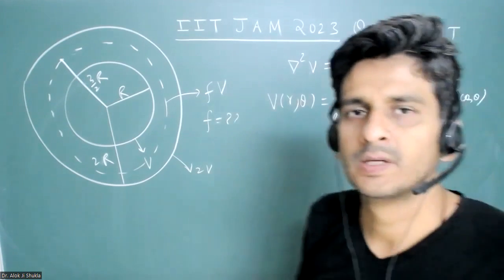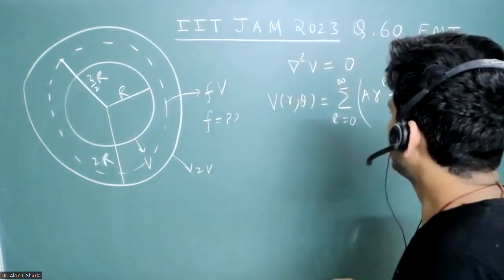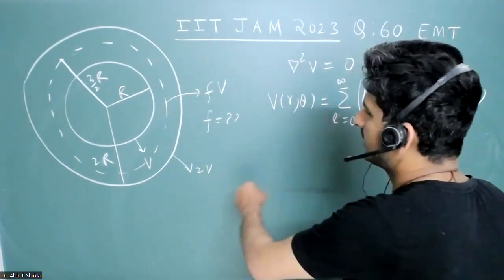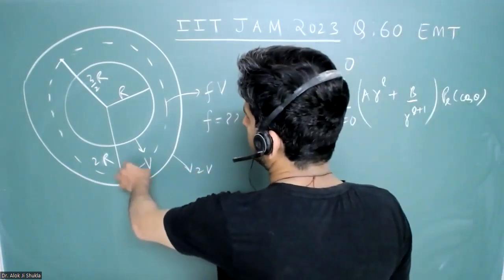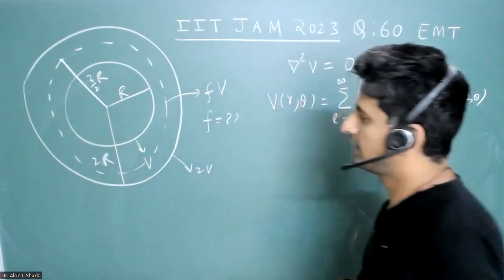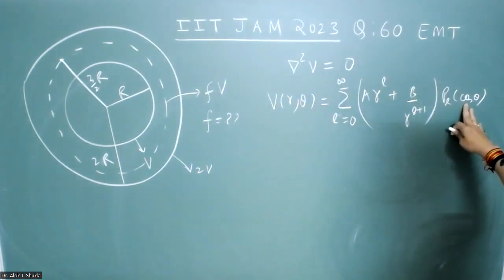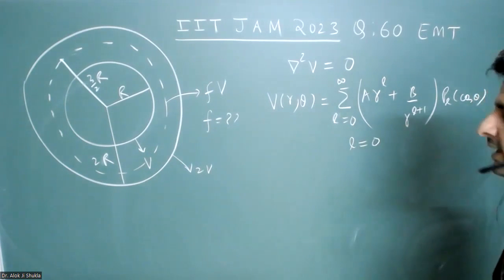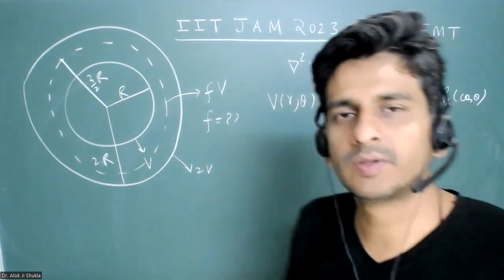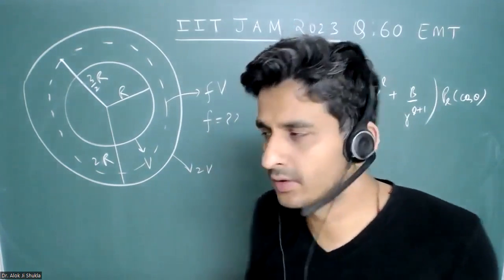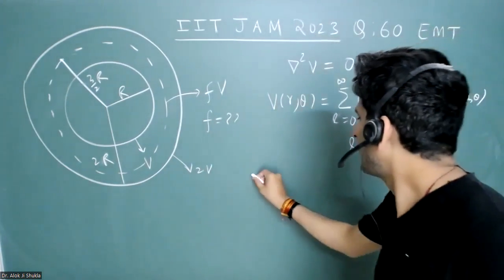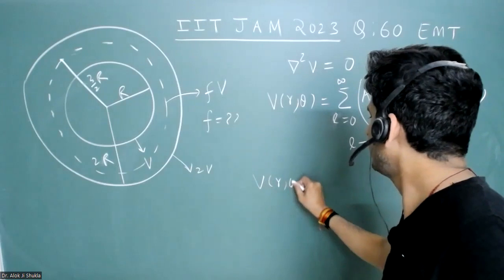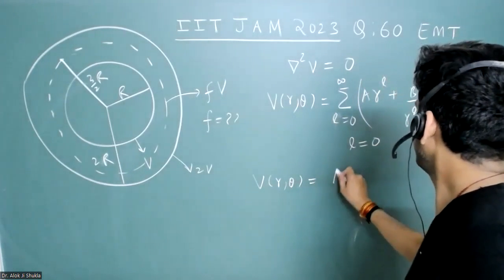You can clearly see that if I apply this boundary condition to the shell of potential v, there is no dependence on theta. So that compels that l should be equal to zero because there should be no dependence on theta. So the profile of potential will become very easy and it will become just...